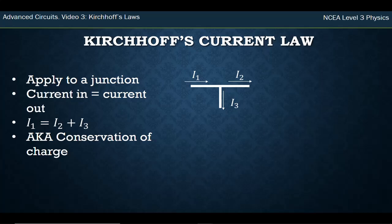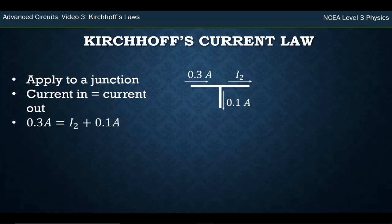So this is basically counting to make sure the same amount of electrons are going in that's coming out of a junction. As an example, let's say we had 0.3 amps coming in and we knew one of the ones coming out was 0.1. Then the missing one has to be 0.2 because 0.2 plus 0.1 has to equal 0.3.